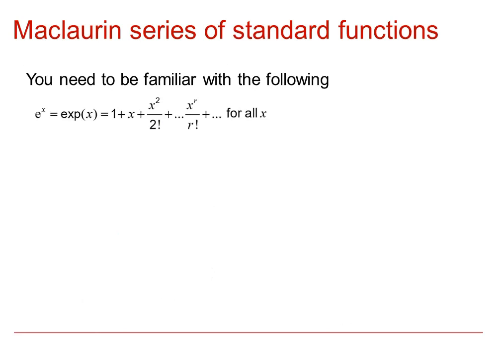You need to be familiar with the following approximations. e to the x is 1 plus x plus x squared over 2 factorial with the general term x to the r over r factorial, and this is valid for all real values of x.